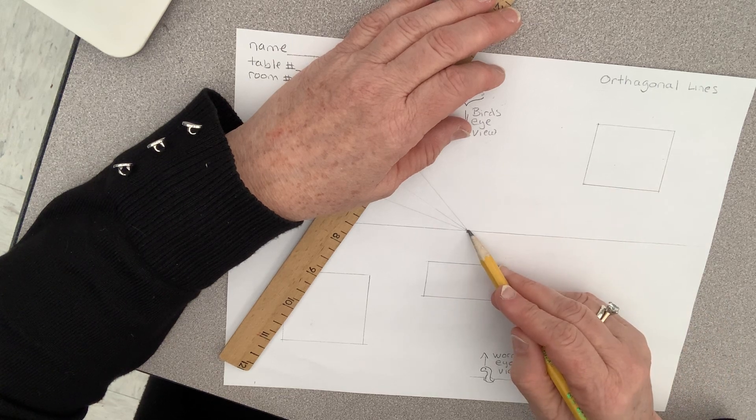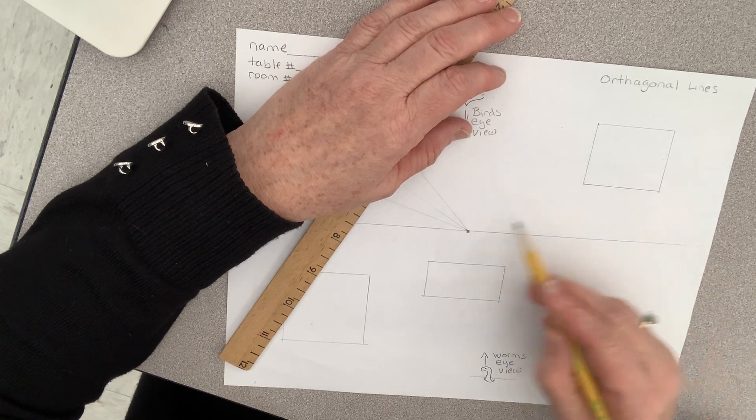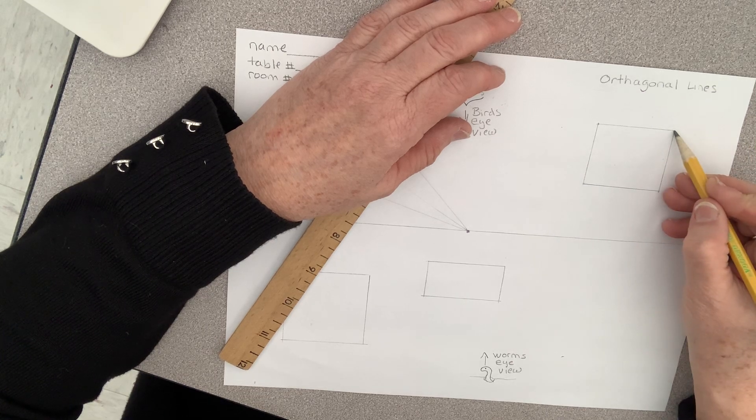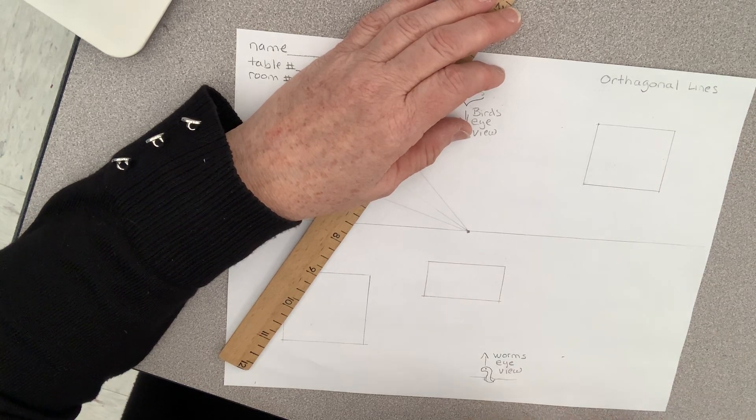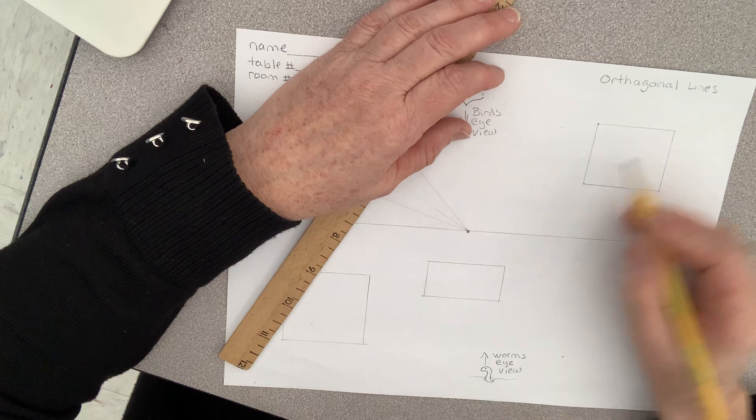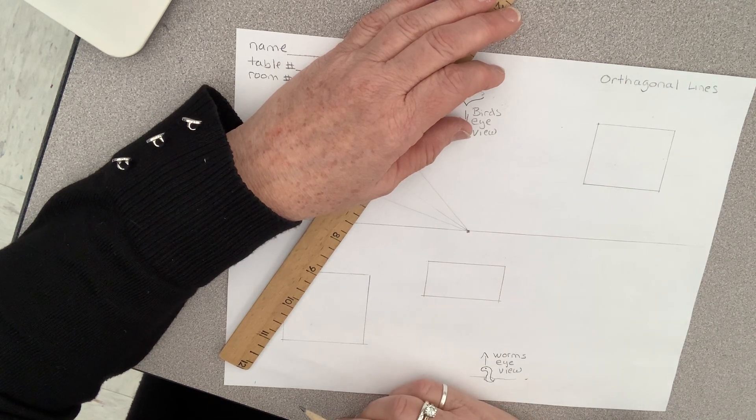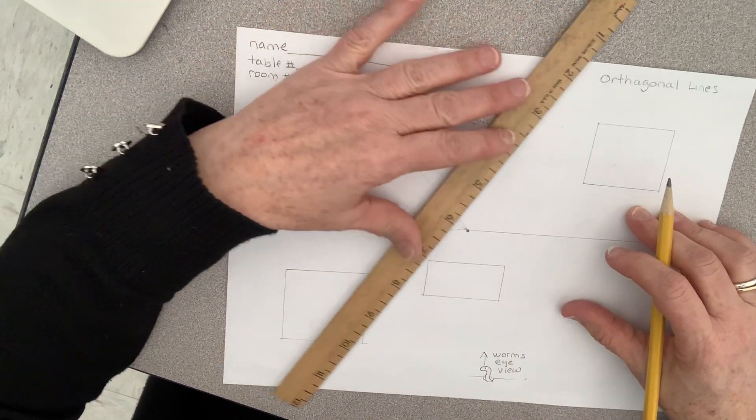You're gonna draw from this corner to there, from this corner to the vanishing point, and from this corner to the vanishing point. Should we draw from this corner? Nope, because if you do you're going through it. So you go ahead and do it and I'm gonna do it along with you.